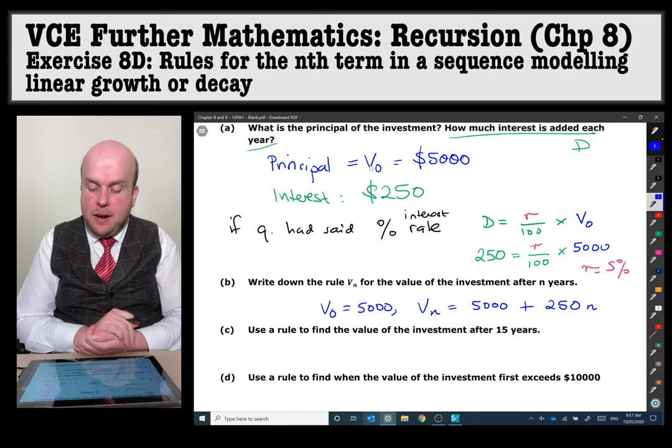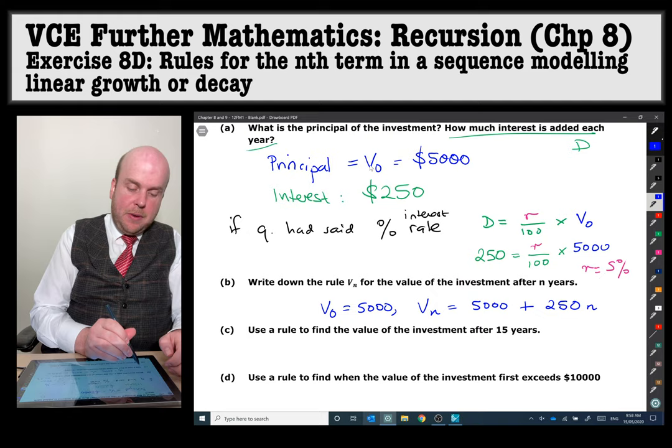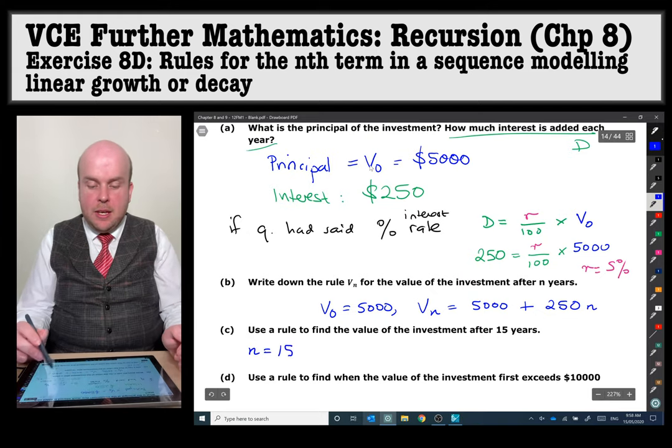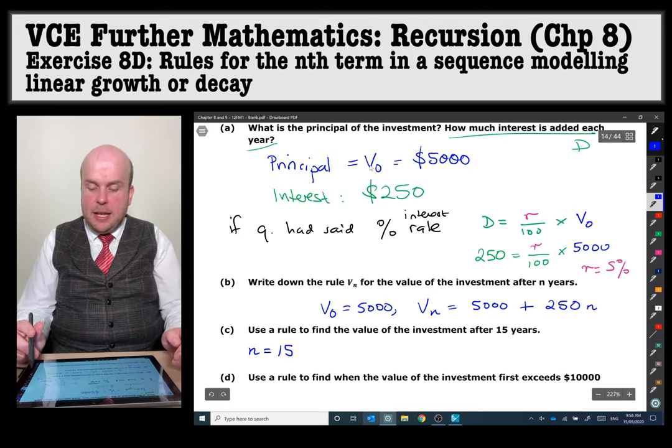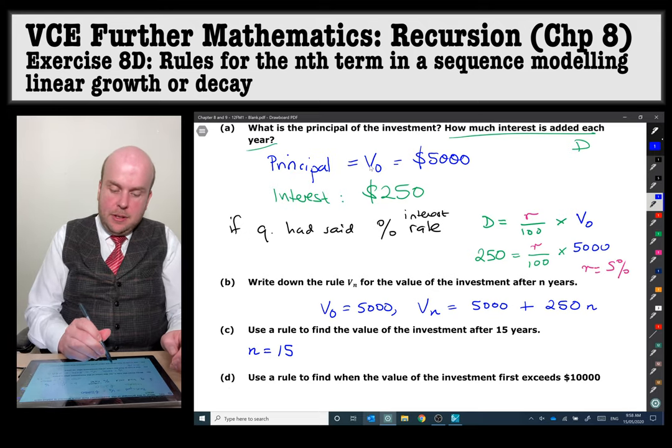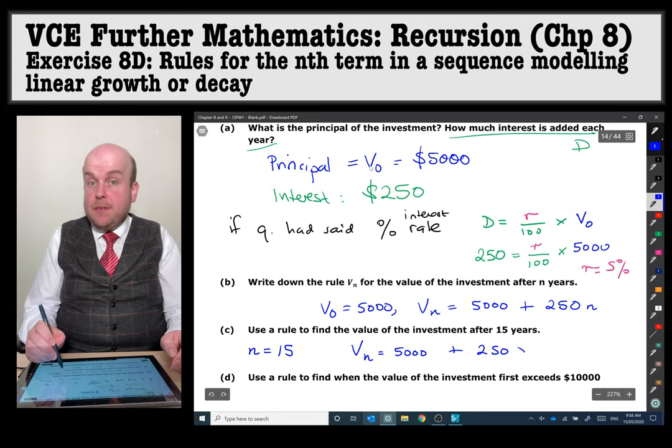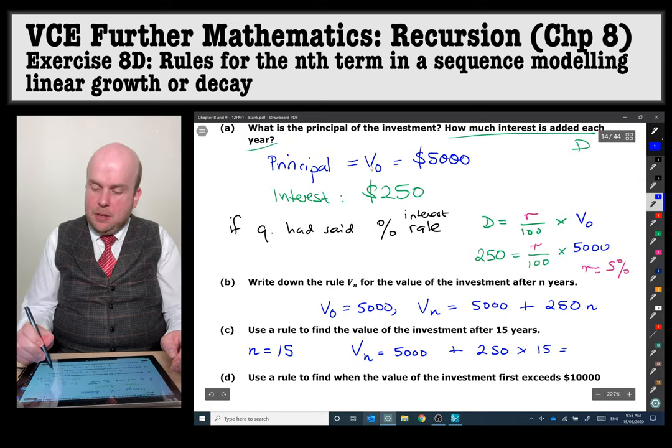Use a rule to find the value of the investment after 15 years. So in this case we know that the n is 15 years because this is the time periods that we're using. It's all about years. So Vn is equal to 5,000 plus 250 times by 15, and that gets us equal to $8,750.